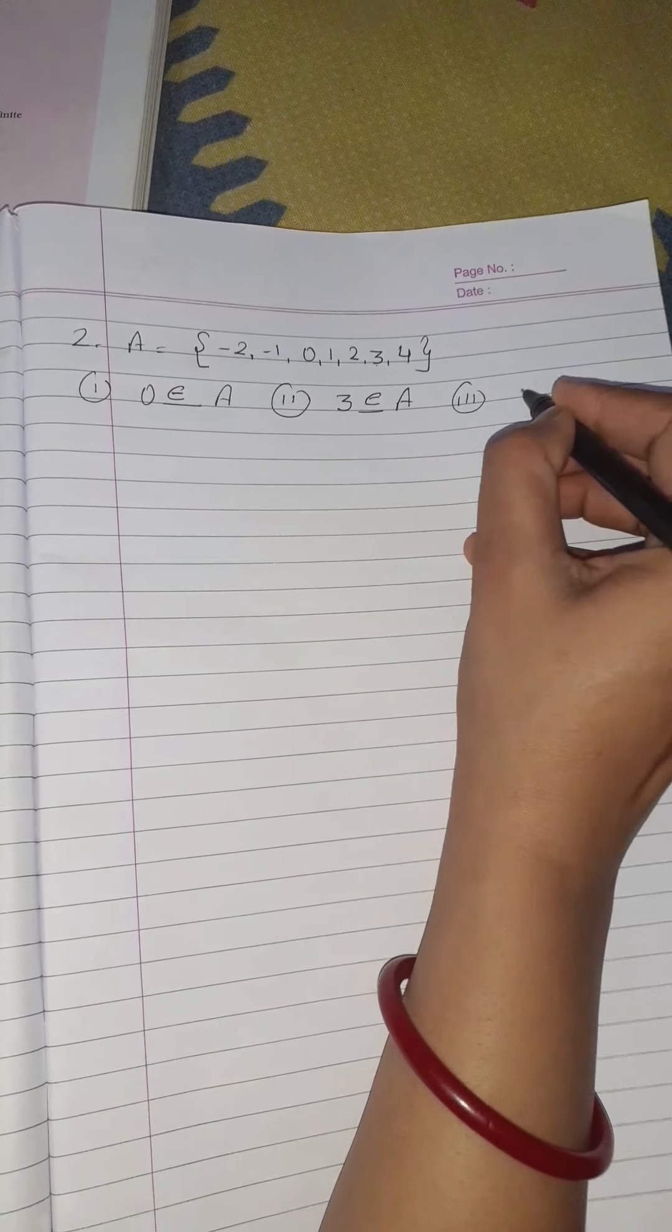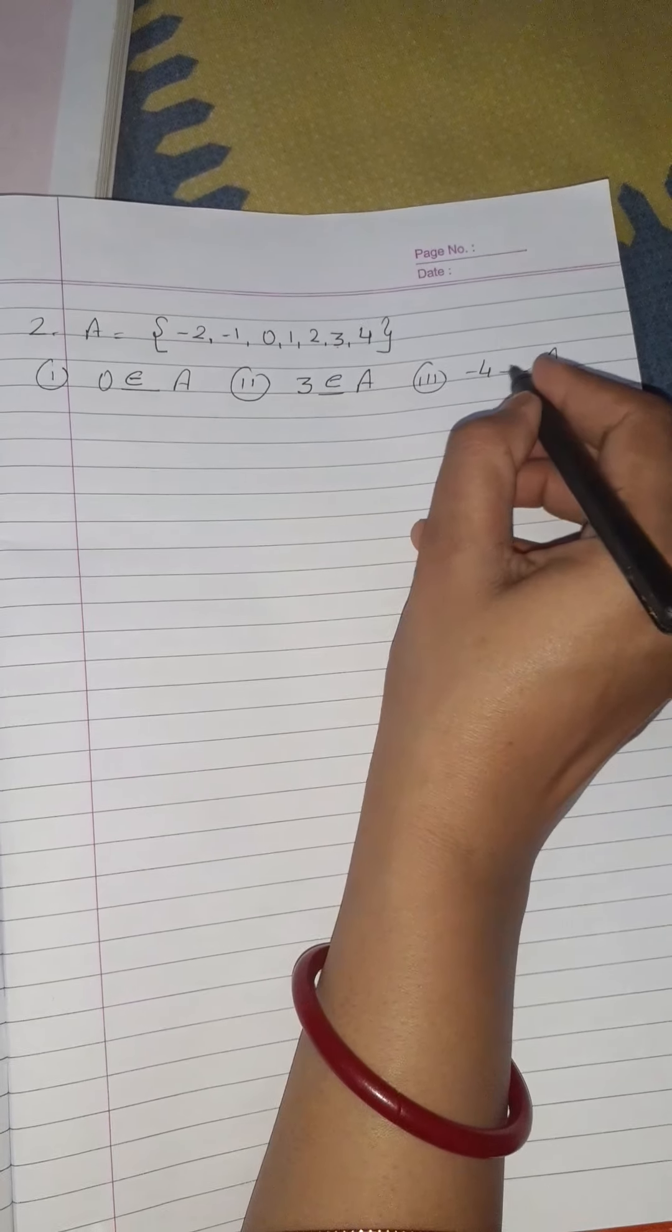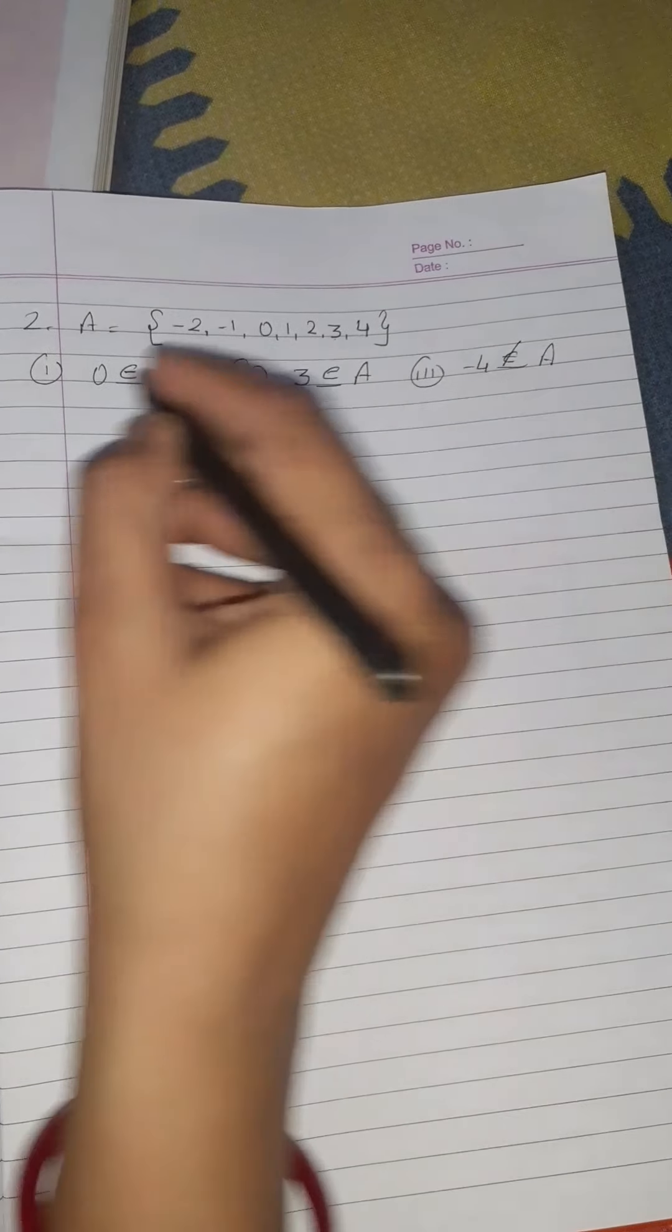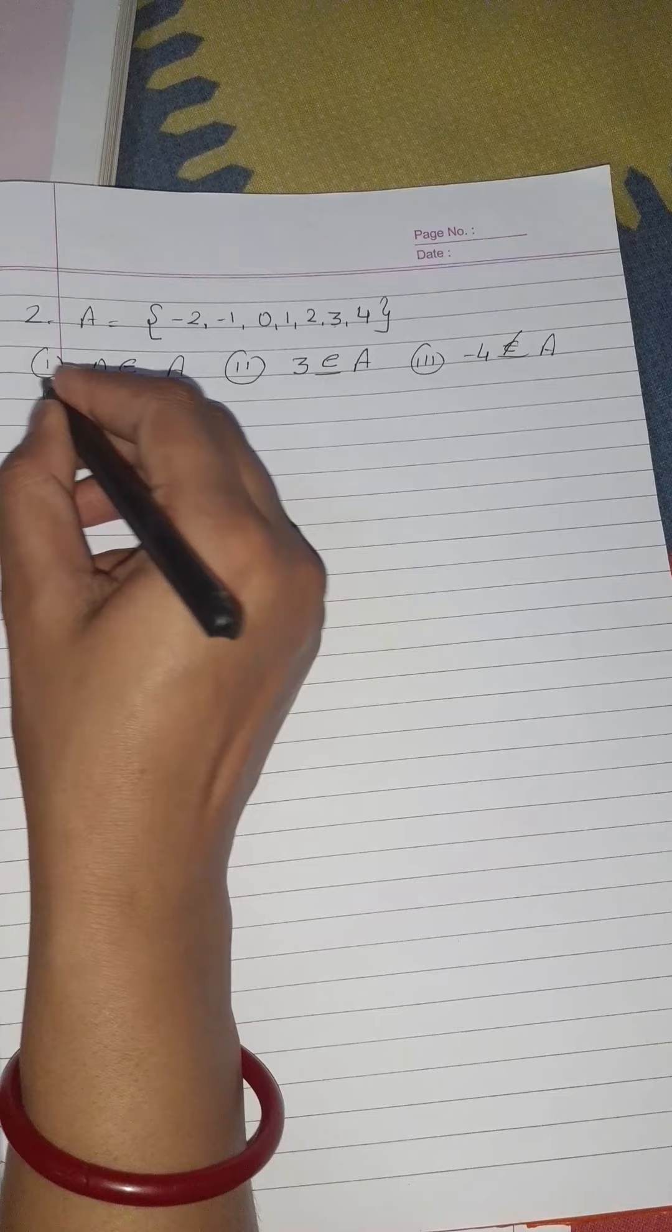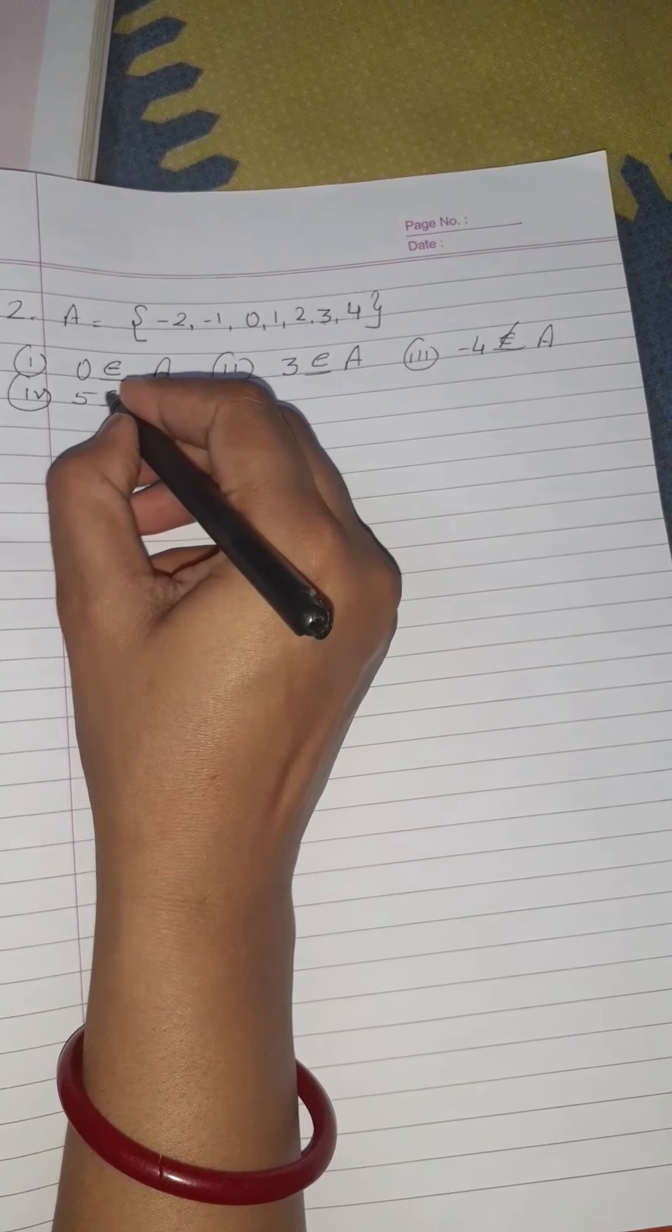Question number 3: does -4 belong to A or not? No, -4 is not there, it does not belong to A. Question number 4: does 5 belong to A or not? No, it also does not belong to A.